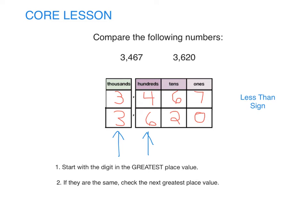We use a less than sign to show that the first number is smaller than the second number. A less than sign looks like an alligator with its mouth open to the right. Mmm, that is delicious! 3,467 is less than 3,620.